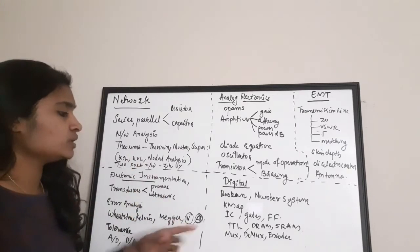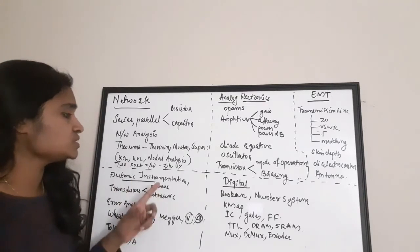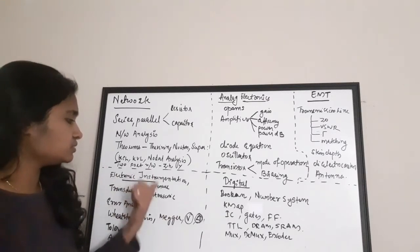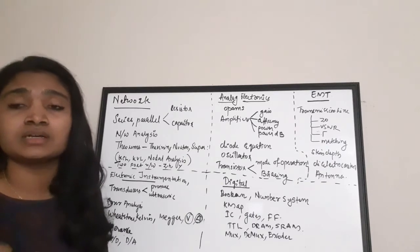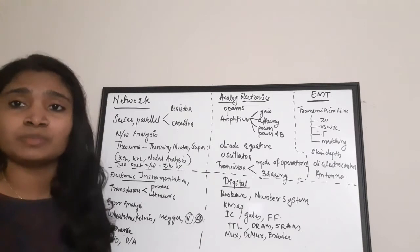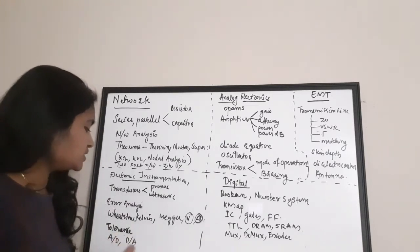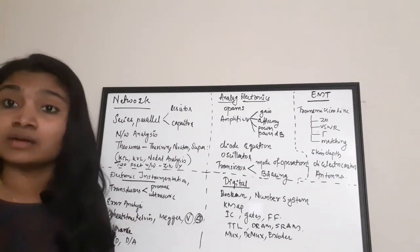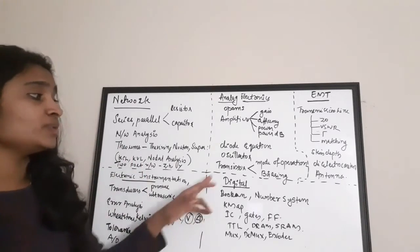Other important topics in Instrumentation include transducers — pressure transducers, ultrasonic transducers, etc. Also, tolerance values for resistors in series and parallel connections are important, and you must concentrate on Analog-to-Digital Converters (ADC) and Digital-to-Analog Converters (DAC).